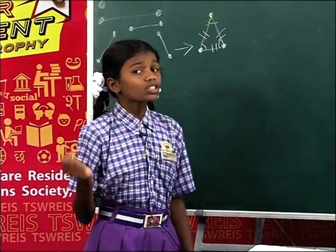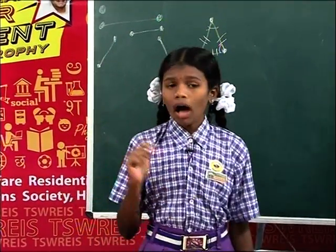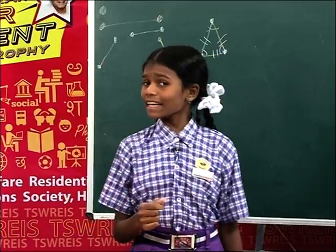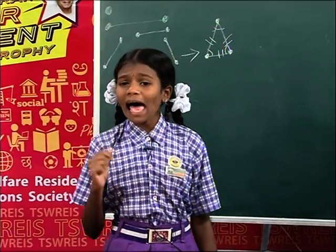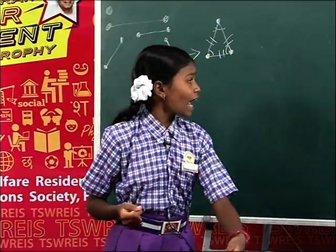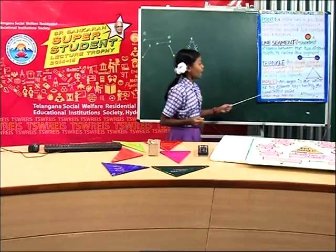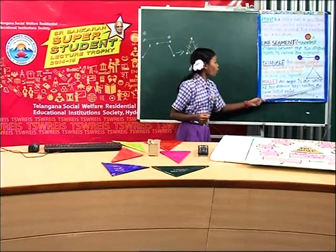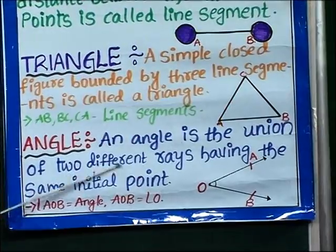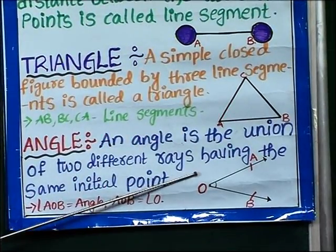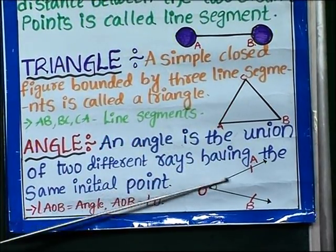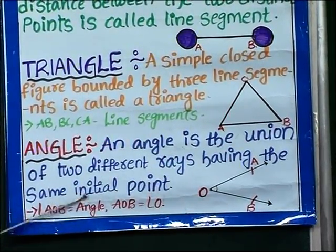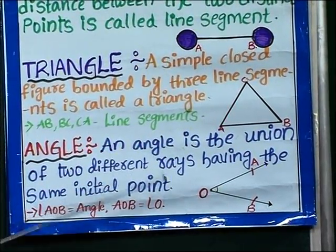Friends, do you know what is an angle? An angle is the union of two different rays having the same initial point.